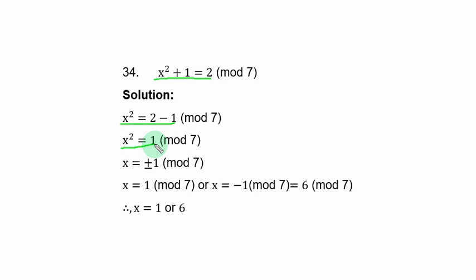What we will do next is to take the square root of both sides in order to get x. Square root of x squared becomes x. And the square root of 1 is plus minus 1. It follows that x is equal to 1 modulo 7 or x is equal to minus 1 modulo 7.